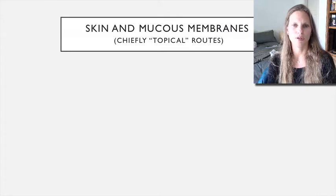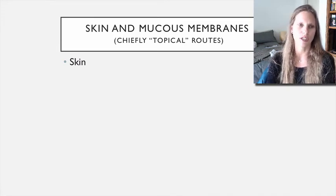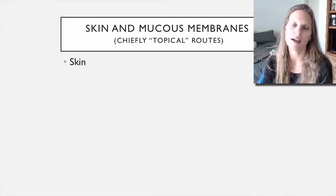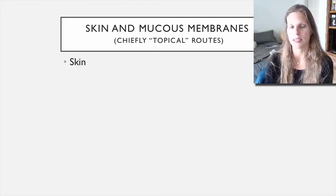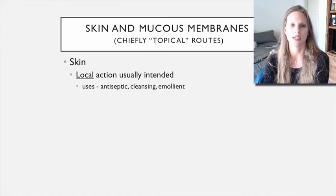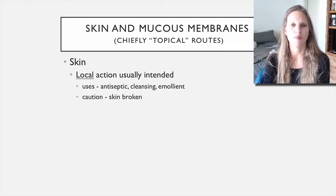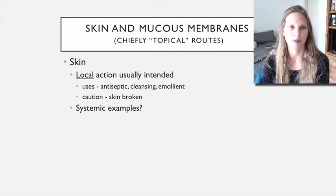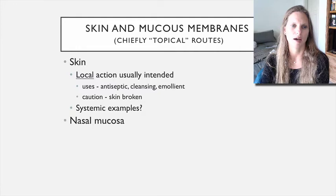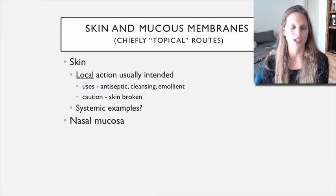Starting with skin and mucous membranes—these are usually considered topical and often local, but not always. Local would include antiseptic agents, cleansers, emollients, or moisturizers. If the skin is broken, we may see some systemic absorption. For systemic examples applied to the skin, the best example is skin patches—nitroglycerin patches, pain medication patches, or patches to help with smoking cessation.